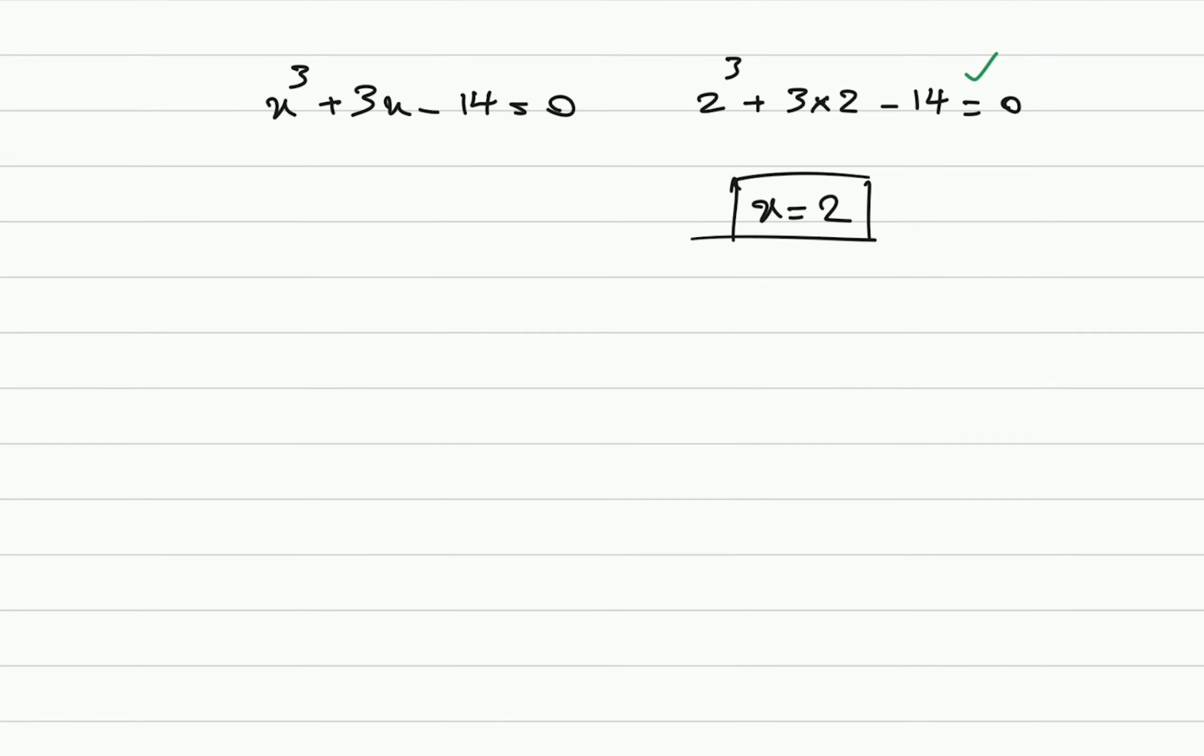So, what we do here is we divide the expression x cube plus 3 times x minus 14 by x minus 2. For the first one, we need to have x squared, then we multiply by both of them. Then we have x cube minus 2 times x squared, and there's a minus sign.